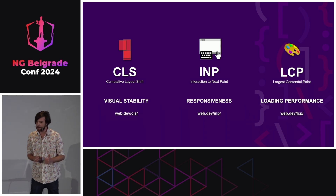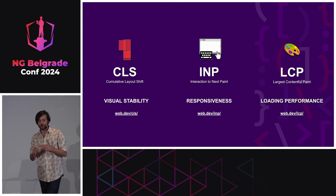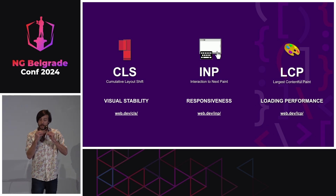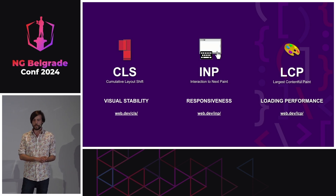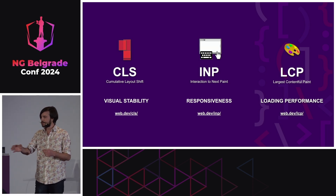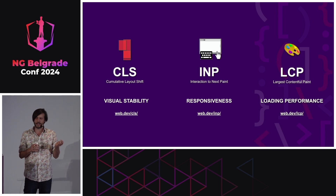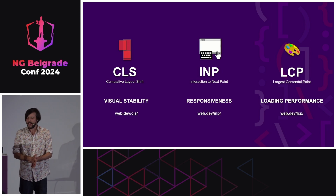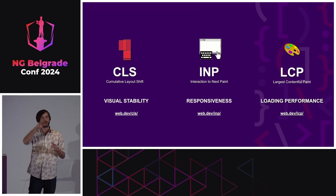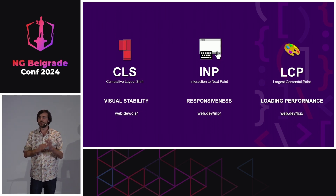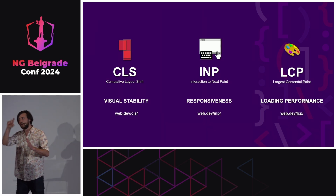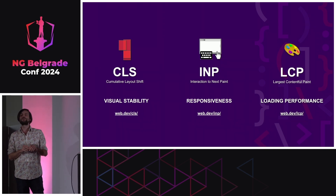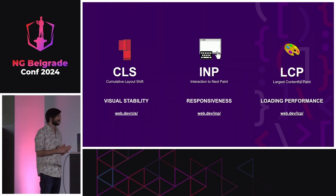We have three Core Web Vitals: Cumulative Layout Shift, Interaction to Next Paint, and Largest Contentful Paint. These three metrics represent different ways the user experiences your website. The first one — Cumulative Layout Shift — is about the visual stability of your website. If you're consuming an application, it should not jump around. You don't want to lose your place while reading.